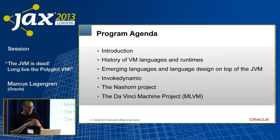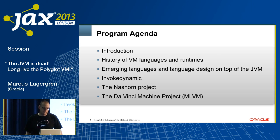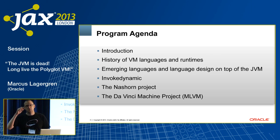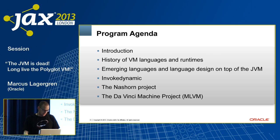I'll talk about the Nashorn project, which is our JavaScript implementation on top of the JVM and polyglot programming and projects associated with it. And I'll end by talking about the multi-language JVM effort that we call the DaVinci Machine project, which is part of OpenJDK where anyone can join and contribute, where we do things for all kinds of multi-language extensions to the JVM for languages like Scala and Ruby.